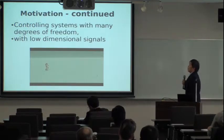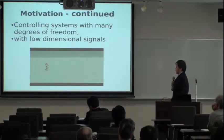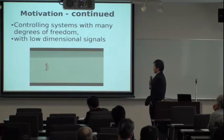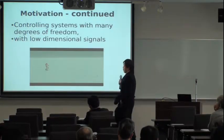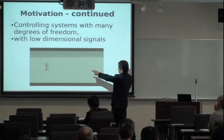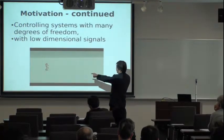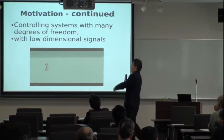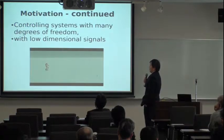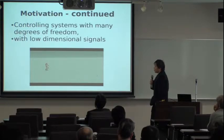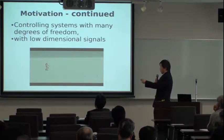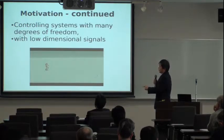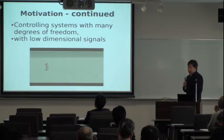We prepared a system where animators can just draw a line or curve over the terrain, and the character follows these lines running or walking. It's a very simple system because the animator only needs to provide this kind of 2D signal, and then the full body animation is generated.